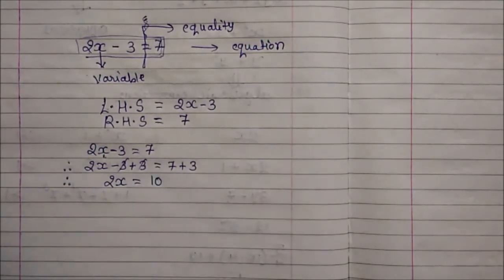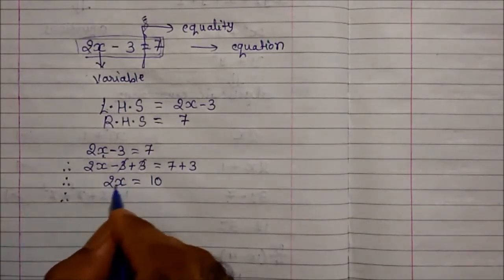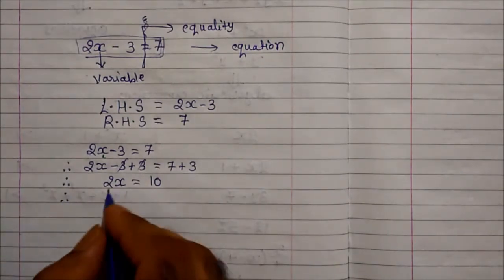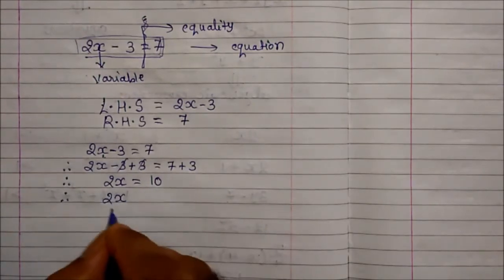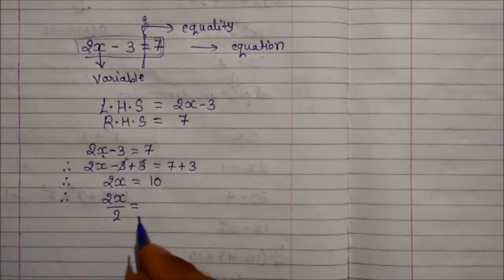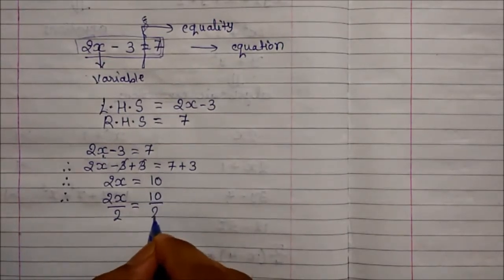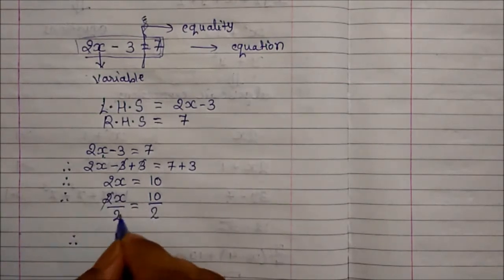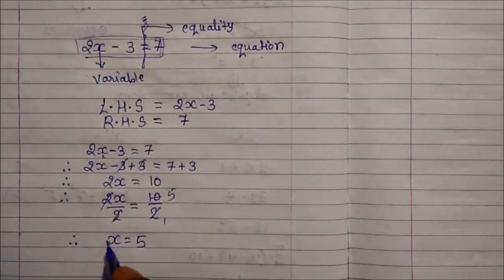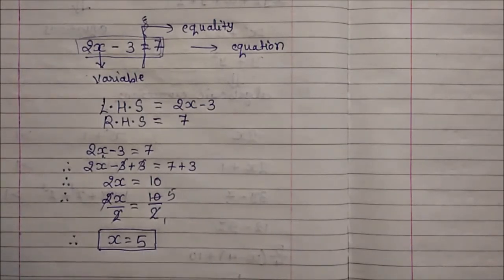So 3 and 3 will get cancelled. 2x is equal to 10. But still x is with 2, and the relation is multiplication. So the opposite of multiplication is division. We will divide with 2. 2x divided by 2 — since we are dividing by 2 on the left hand side, we have to divide on the right hand side also. 2 fives are 10, so here we get the value of x is 5.